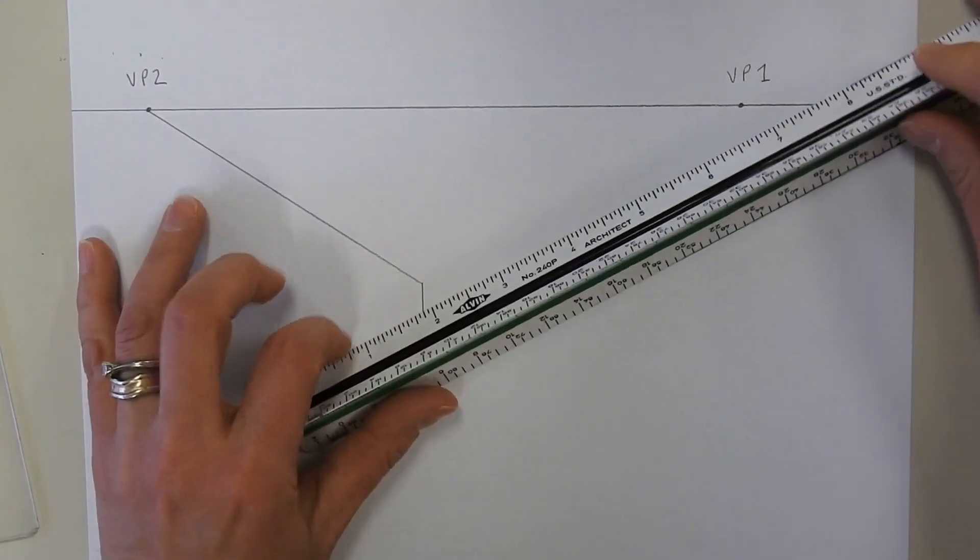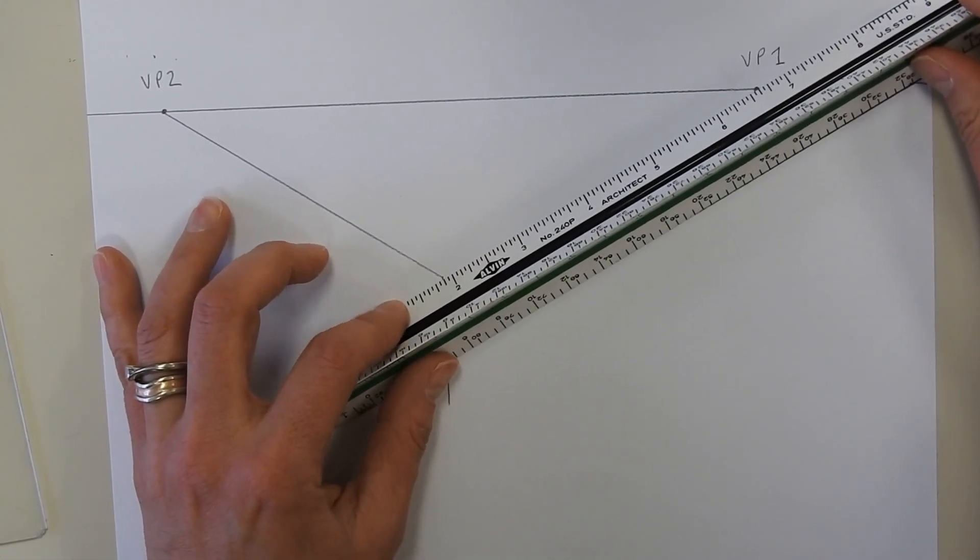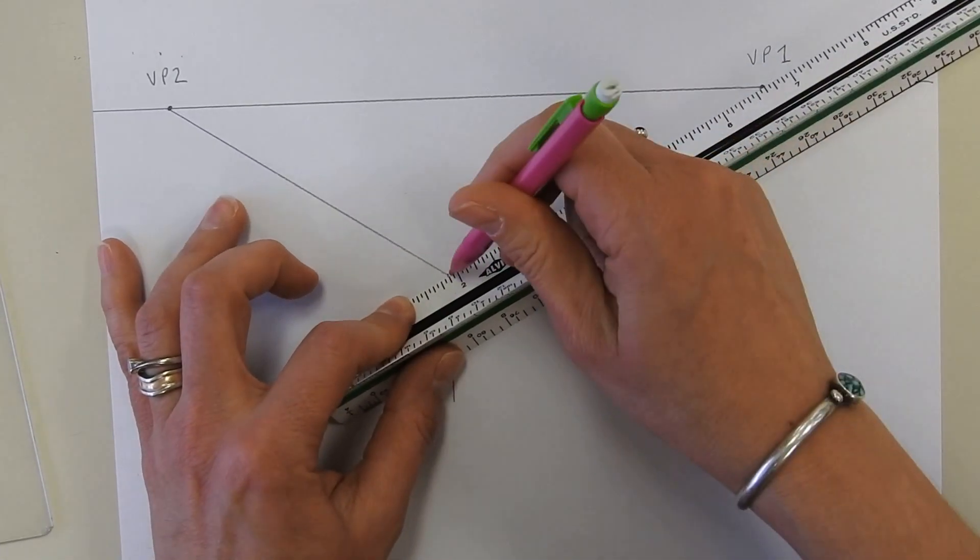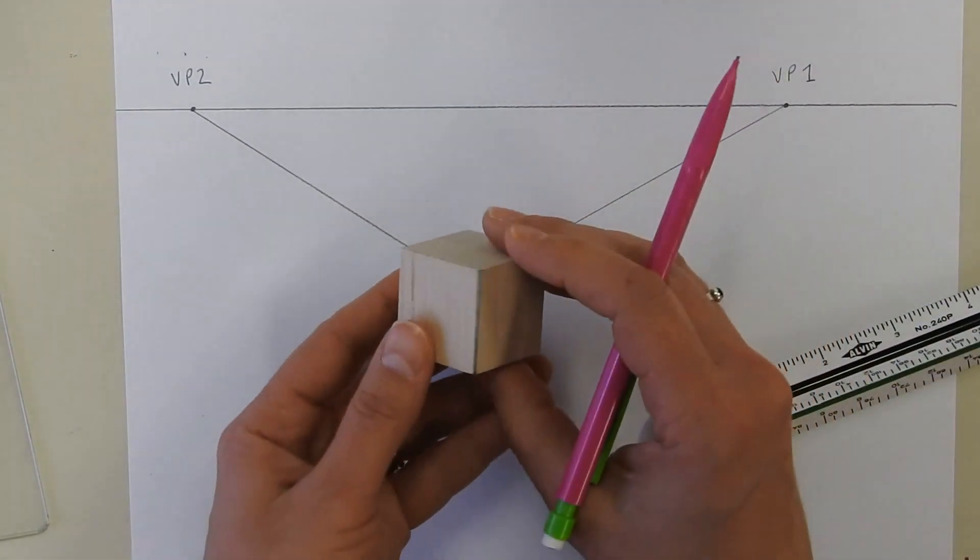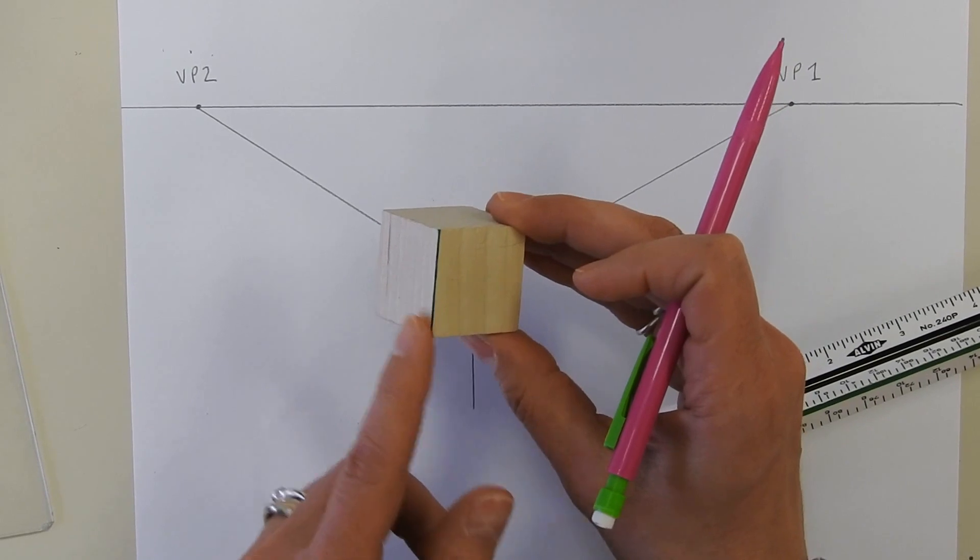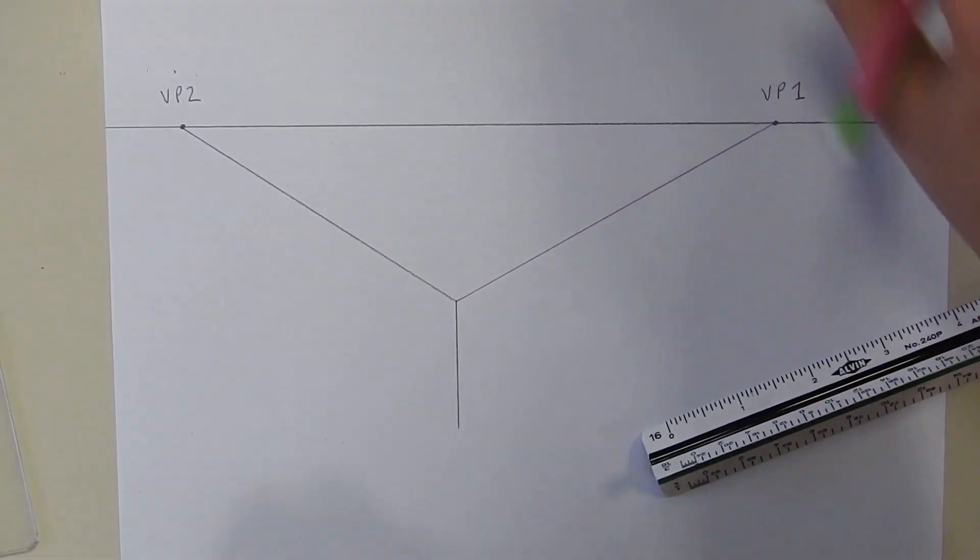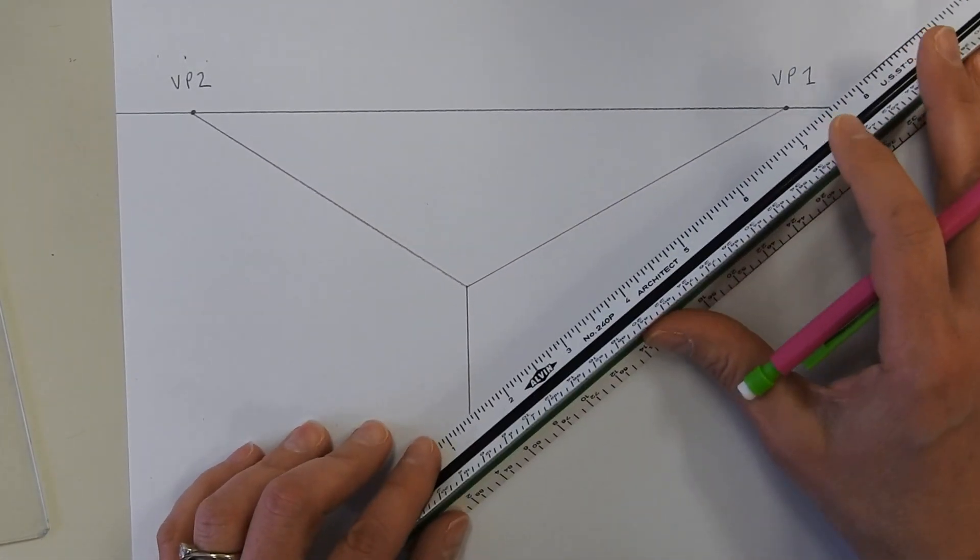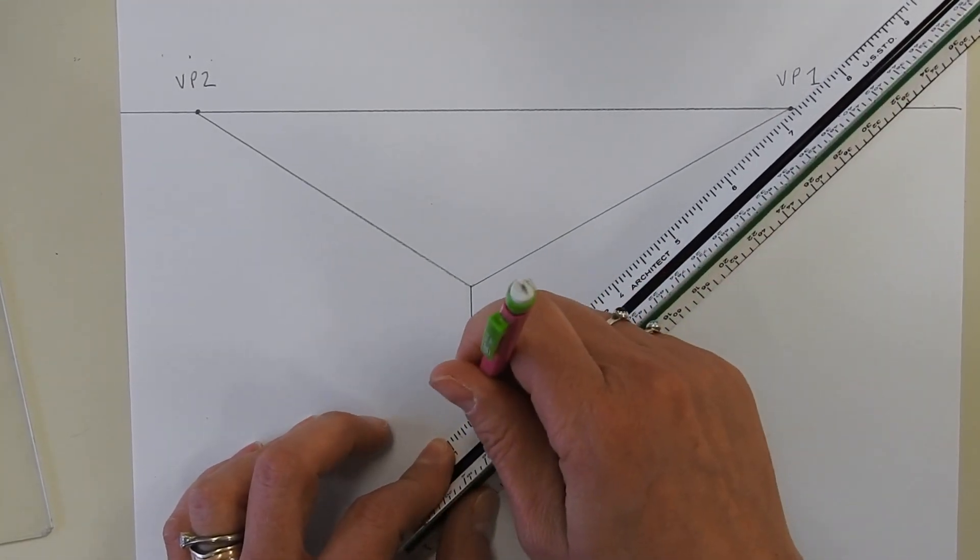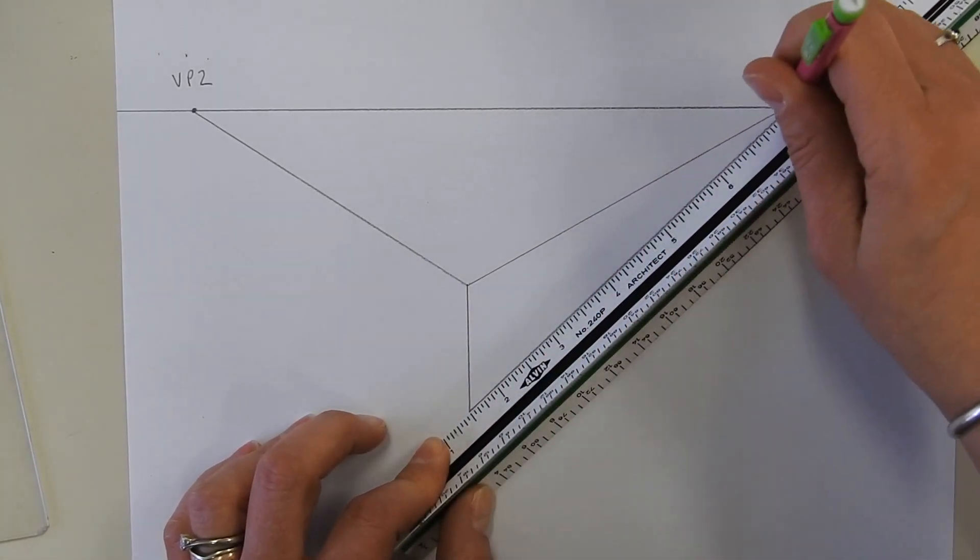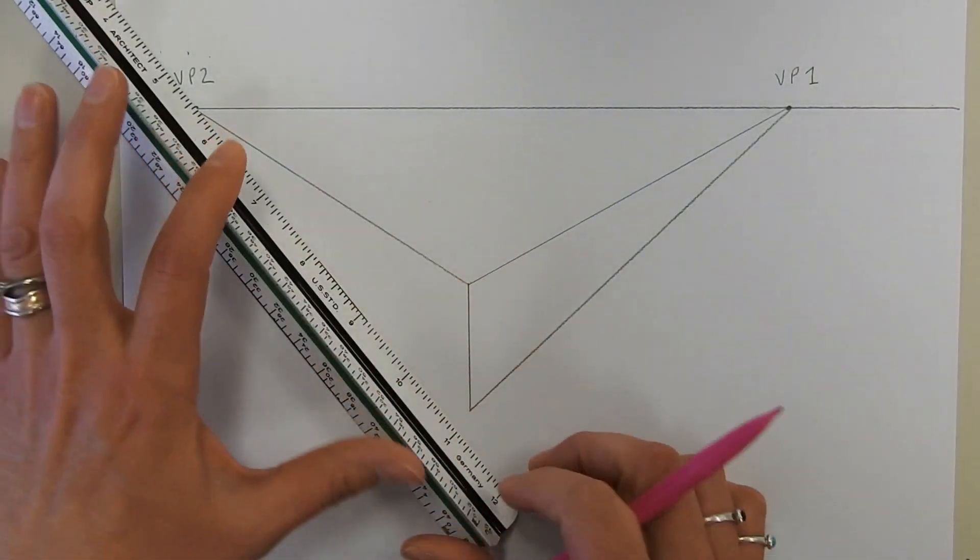Like that. And like that. Okay, and if we look at the cube again, it also has these bottom lines that are going to go to the vanishing point. So now I'm going to take the bottom lines and connect those to both vanishing points.